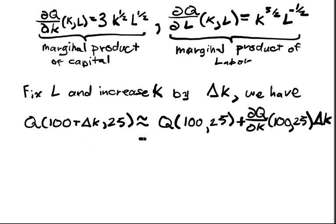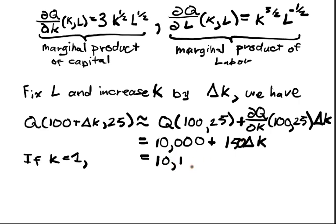And what is this equal to? We computed this is 10,000. And if we plug in 125 into this function, we get 3 times 10 times 5, which is ultimately going to give us 150 delta K. So now if K equals 1, then this equals 10,150.